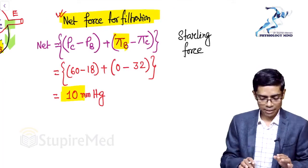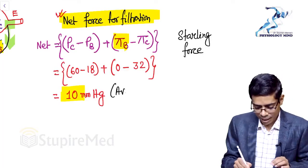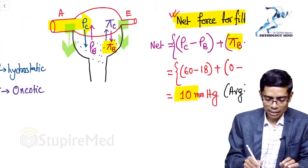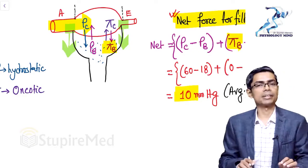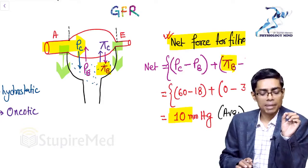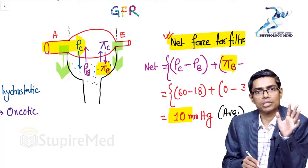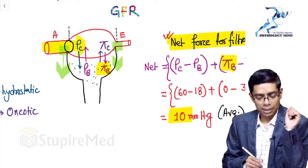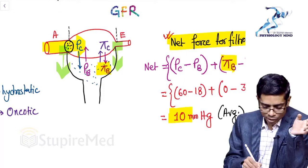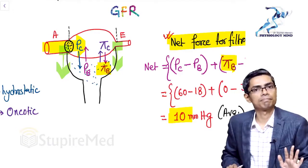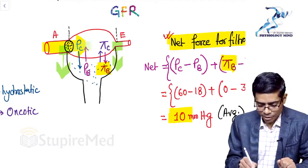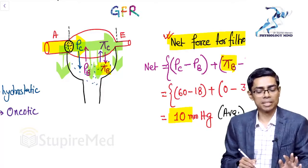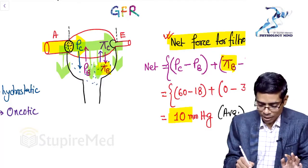This 10 mmHg is the average force across the glomerular capillary. If asked at which level — afferent or efferent — the filtration force is maximum, we need another concept. At the afferent end, blood flows with a certain concentration of protein molecules. As blood flows through the capillary from afferent to efferent end, water and solutes are filtered out.